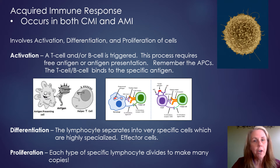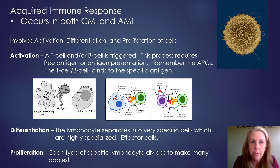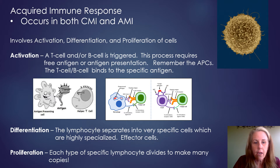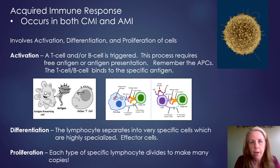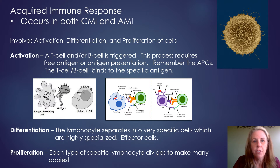Differentiation occurs after activation. This is when the T cell or B cell changes into different types of cells. The T cell will separate into very specific cells, and the B cell will separate into very specific B cells. Some of these we call effector cells. Effector cells are cells that immediately have a job — they immediately go to work on that antigen and that infection.